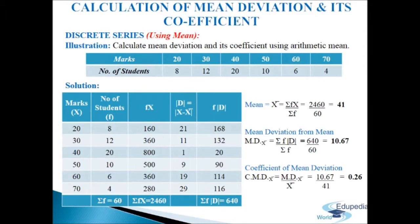Calculation of mean deviation and its coefficient in discrete series. We have to calculate mean deviation and its coefficient using arithmetic mean — marks and number of students are given. We will make a table of five columns. In the first column we write marks, denoted by x. In the second column we write number of students, denoted by f.